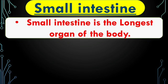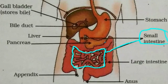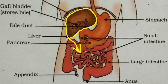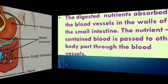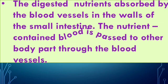The food mixture from the stomach, the bile from the liver, and the enzymes from the pancreas all come into the small intestine. See here — this is the small intestine. The bile from the liver and the enzymes from the pancreas are released into the small intestine, which helps in the complete digestion of nutrients. The digested nutrients are then absorbed by the blood vessels in the walls of the small intestine.